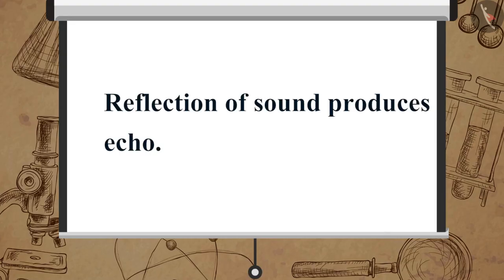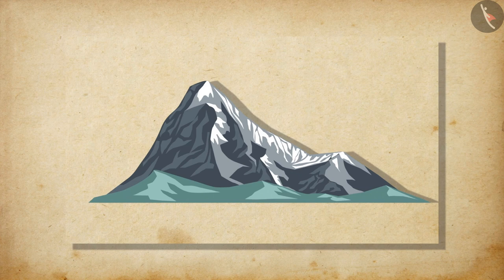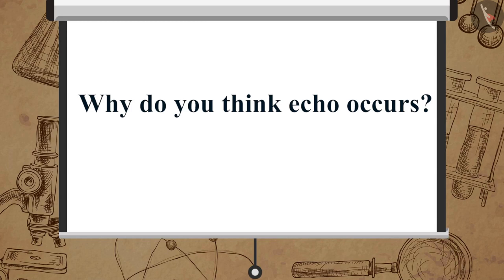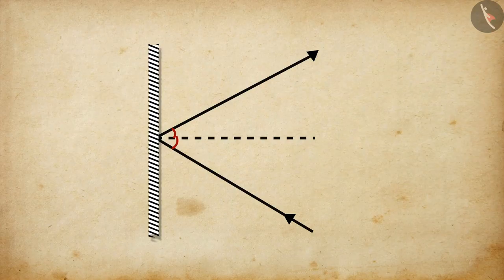Now, let us learn how reflection of sound produces echo. When you clap your hands near a reflecting surface like a mountain, you will get to hear the same sound a little later. This sound which we hear is called an echo. Echo takes place as the sound is reflected back after hitting a reflecting surface.